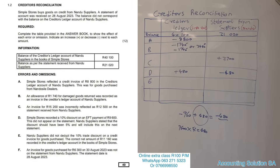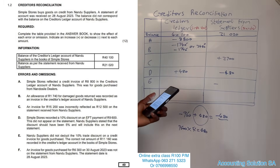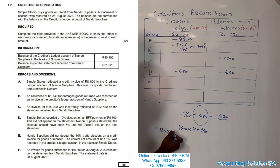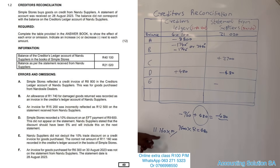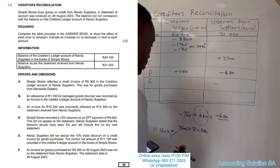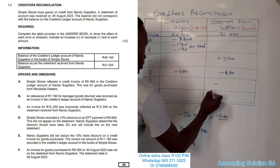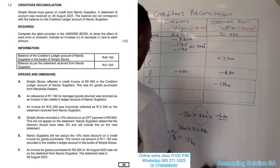Number E: Nardu Supplier did not deduct the 10% trade discount on an invoice for goods purchased. The correct net amount of 11,160 was already recorded in the creditors ledger of Simple Store. Since this is a net amount, it already represents 90% of the gross. We calculate: 11,160 divided by 90 times 10 equals 1,240. This amount of 1,240 must be subtracted on the supplier's side.